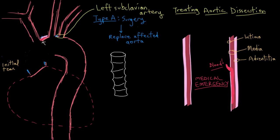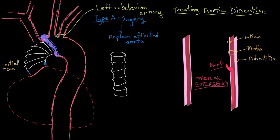Remember that intimal flap — the piece of intima that became separated from the media as blood sheared the two layers apart? There's a little bit left over. The graft gets put just a bit further than that intimal flap, and then both ends of the graft get sutured in. If it needs more reinforcement, something called Teflon felt will be sutured around the outside to sandwich this part of the aorta and keep things stable. Sometimes surgeons will also use a special glue called bioglue to keep it even more secure.